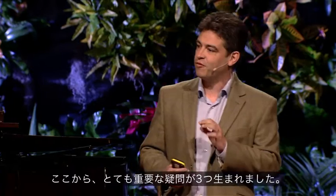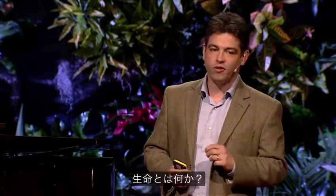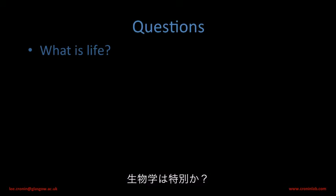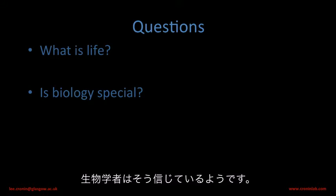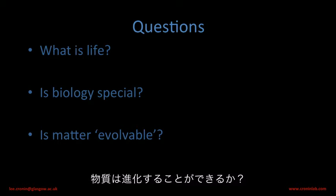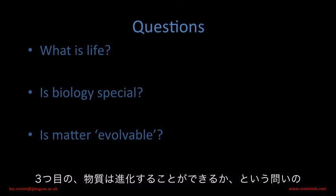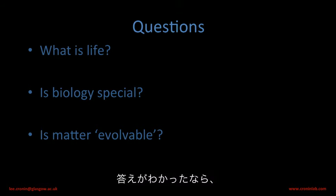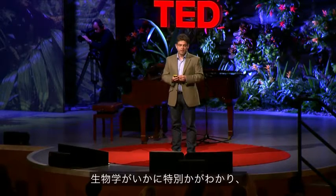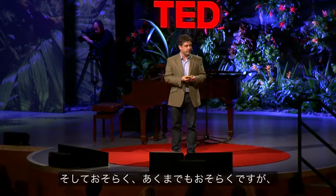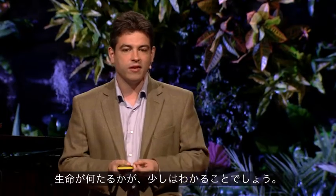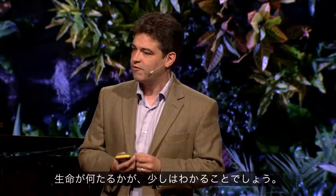So this raises three really important questions. What is life? Is biology special? Biologists seem to think so. And is matter evolvable? If we answer those questions in reverse order — the third question, is matter evolvable? — if we can answer that, then we're going to know how special biology is. And maybe, just maybe, we'll have some idea of what life really is.